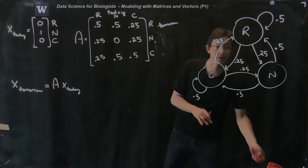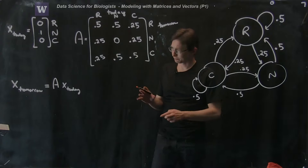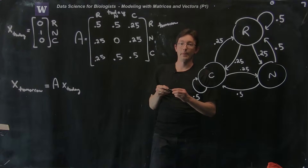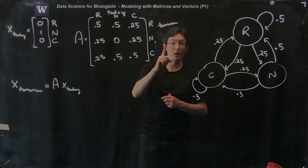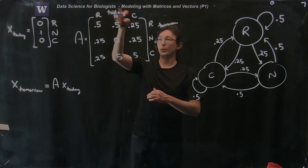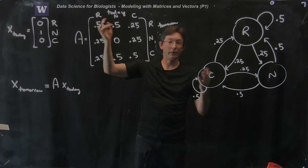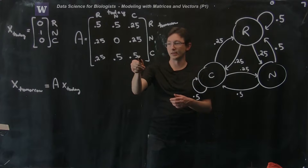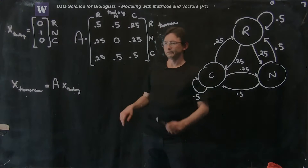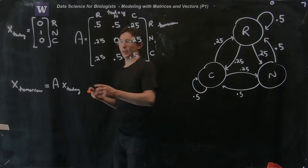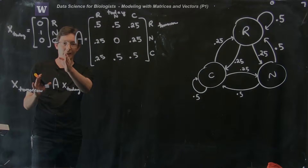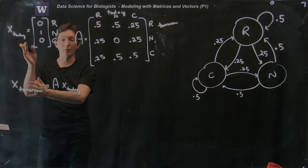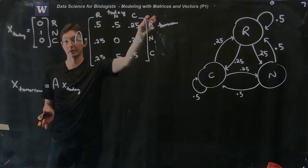We now have this A matrix, read completely off of the diagram. You can verify that every column adds up to one — this is the statement that whatever the state is today, the weather will be something tomorrow. So all columns add up to one. And now if I have my state x today, I just multiply it by the A matrix to get the probability of weather tomorrow broken down into rainy, nice, and cloudy.